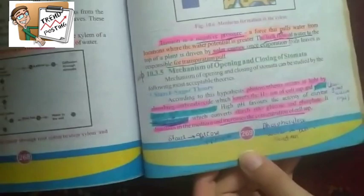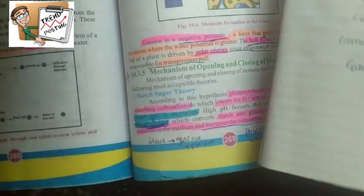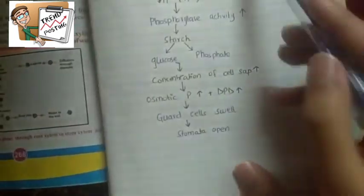Now we come to theories. Since these are mechanisms, the easiest way to remember theories is to make flow charts. That is the easiest way.